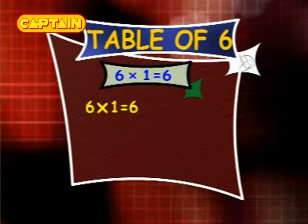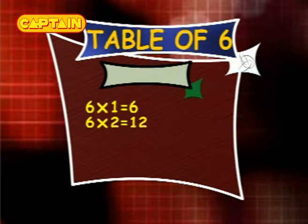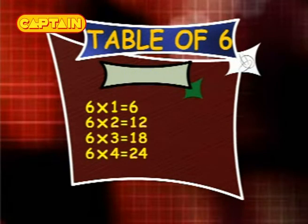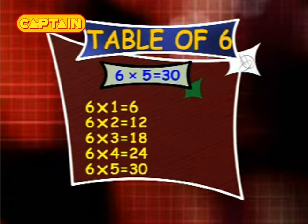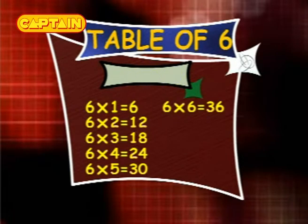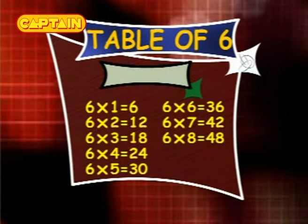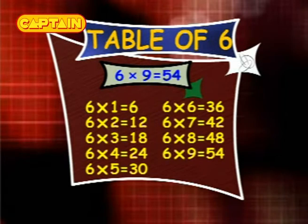Table of 6. 6×1 is 6. 6×2 is 12. 6×3 is 18. 6×4 is 24. 6×5 is 30. 6×6 is 36. 6×7 is 42. 6×8 is 48. 6×9 is 54. 6×10 is 60.